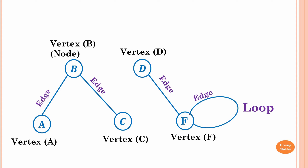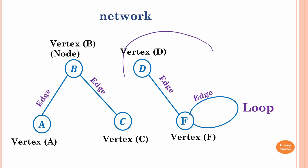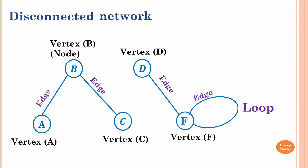In town A the degree is one, B has a degree of two, C has a degree of one, D has a degree of one. For F, the loop gives one edge but three degrees, so F has two edges and three degrees. Since D and F don't connect to the other three towns, this is called a disconnected network.